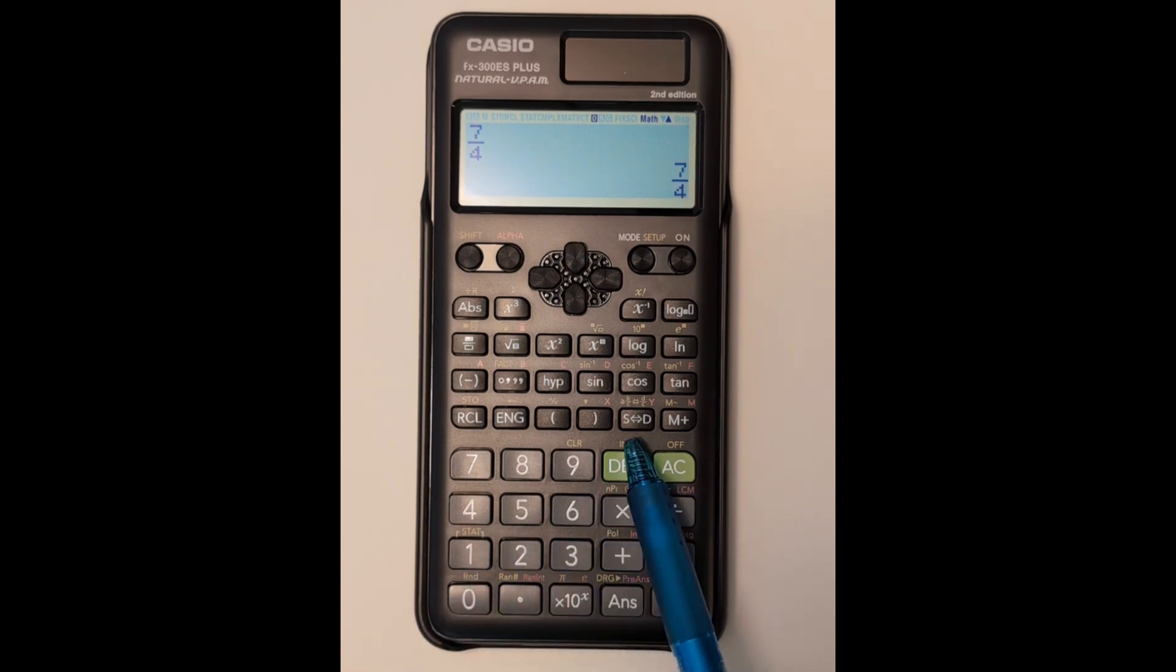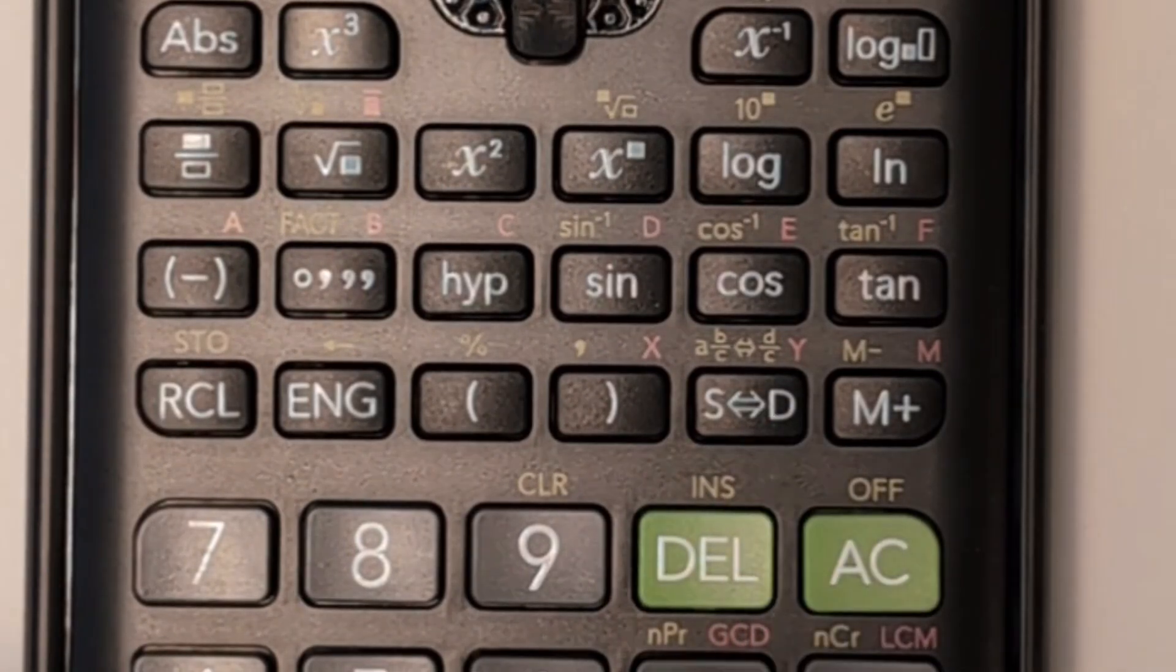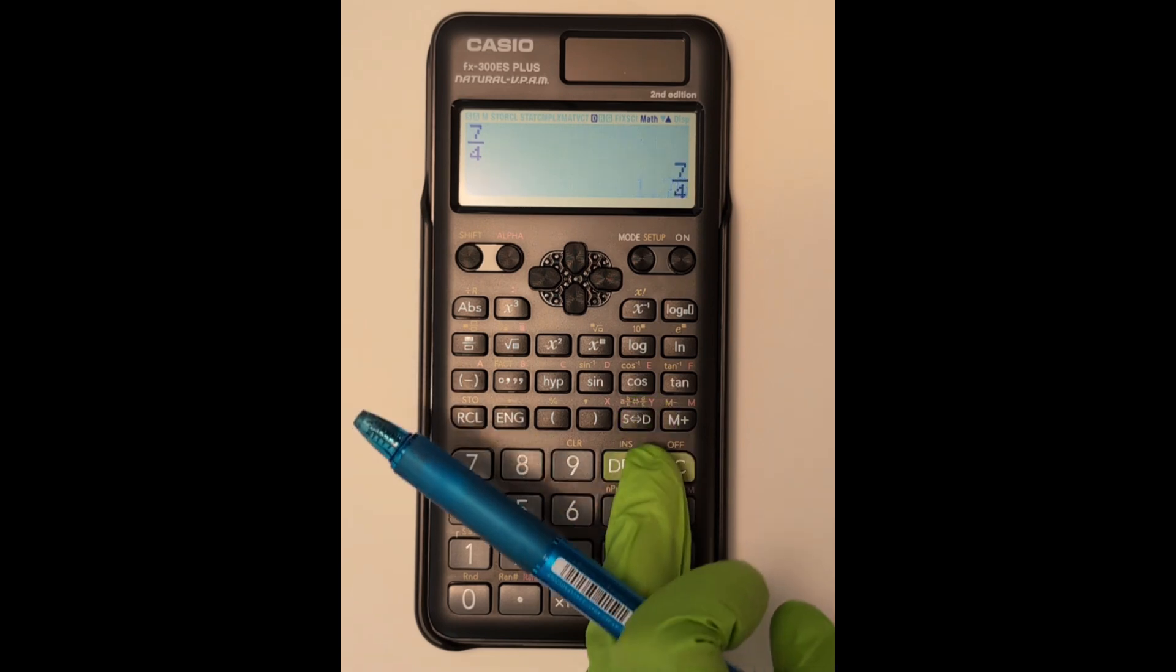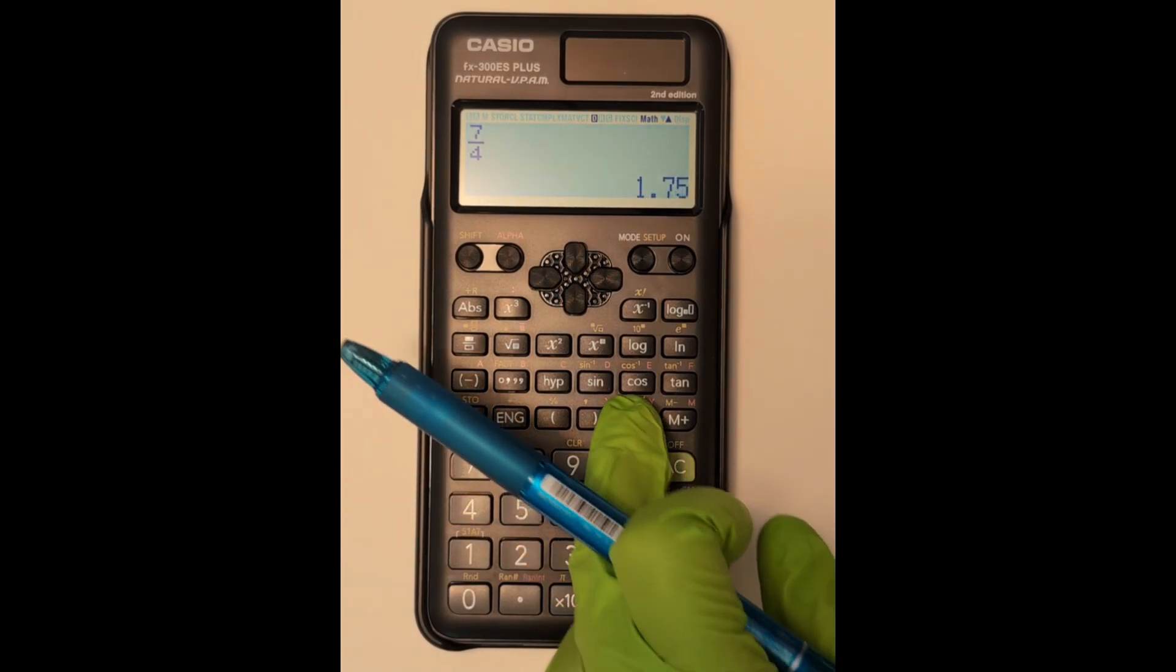Sometimes your answer will show as a fraction and you may want it in decimal form. Using the SD button you can switch the way the calculator displays your answer.